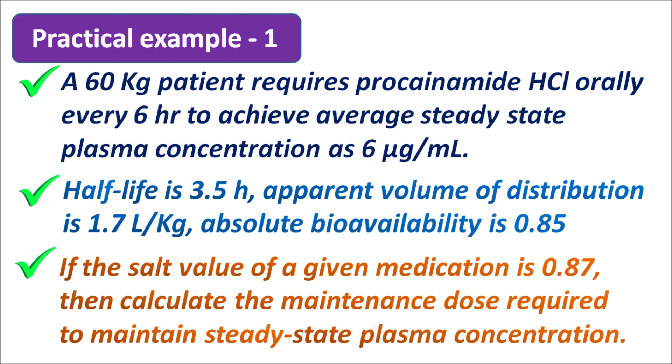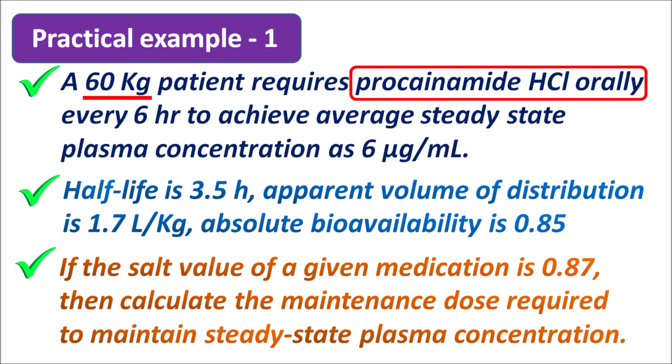The drug is procainamide HCl given by oral route, so it is an extravascular administration. It is given to a patient with body weight 60 kg, and this dose is to be given every 6 hours to achieve a steady state plasma concentration of around 6 micrograms per ml.